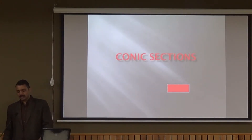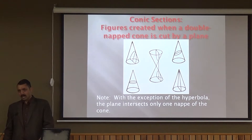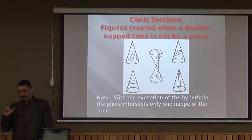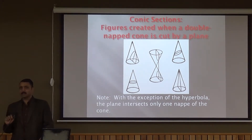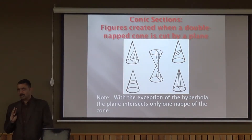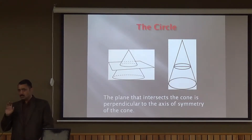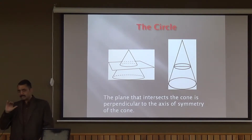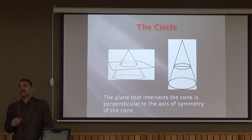Good morning students. We are starting today's topic: conic sections. How can we define a conic section? We can take a cone — a figure created where a double cone is cut by a plane. When we cut a cone with a plane in different ways, we get nearly four figures. Those figures we can name: circle, parabola, ellipse, and hyperbola. We get a circle when a cone is cut by a plane perpendicular to its axis.